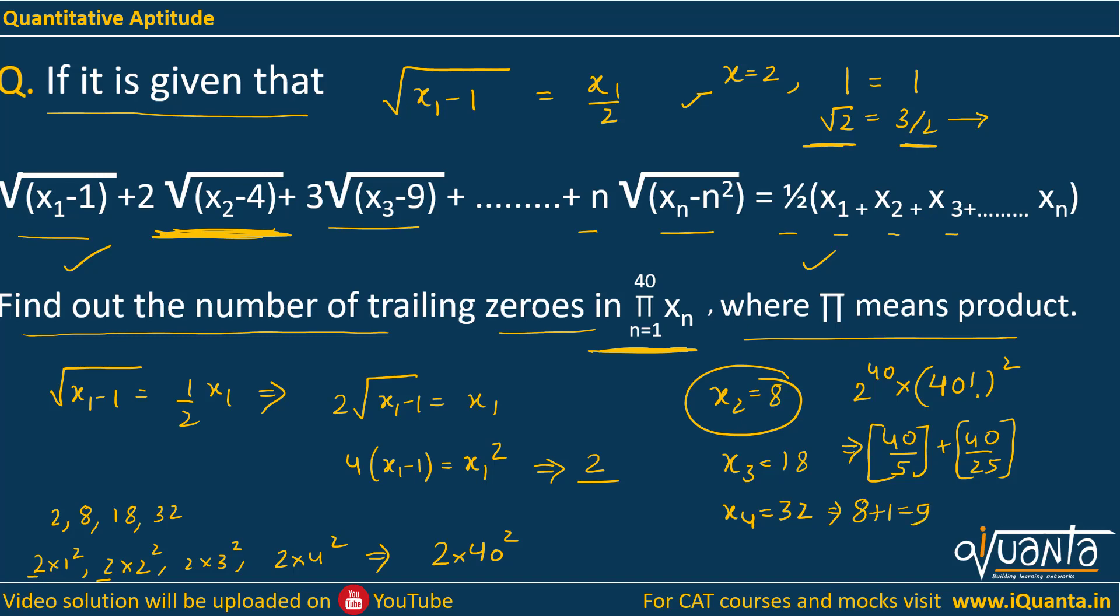In 40 factorial, power of 5 is 9. So in (40!)² it will be 18. So we'll have 18 trailing zeros in this product.